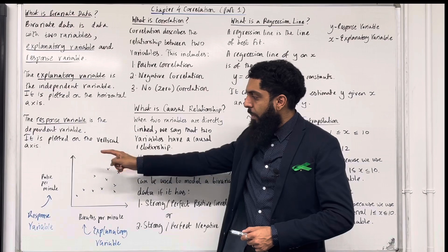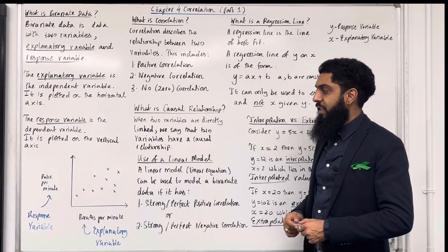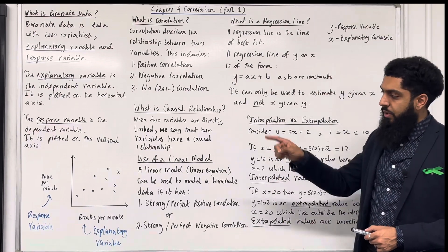On the vertical axis, we've got pulse per minute. Pulse per minute depends on breath per minute. So pulse per minute is the dependent variable. In A-level maths, we call the dependent variable the response variable.